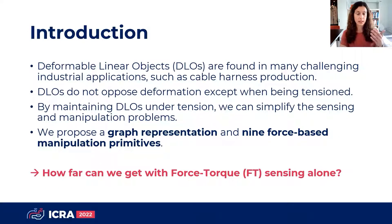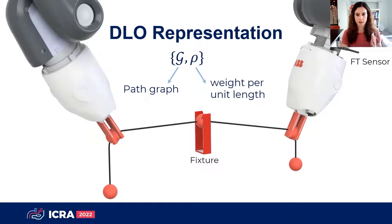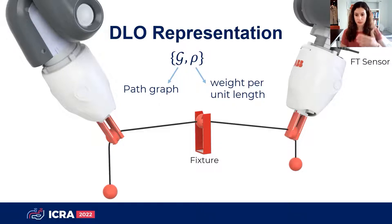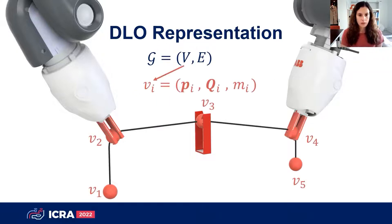When something unexpected happens, it's very hard to recover with force alone. The proposed representation is summarized as a graph G, consisting of the weight per unit length — which is either measured beforehand, known, or measured using the motion primitives as a first step — and the path graph that is constantly updated as we manipulate the object, containing a set of vertices and edges.